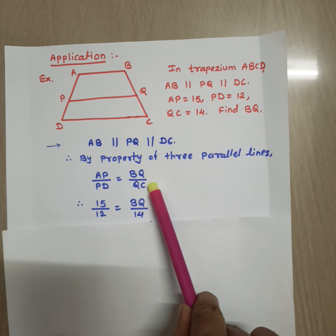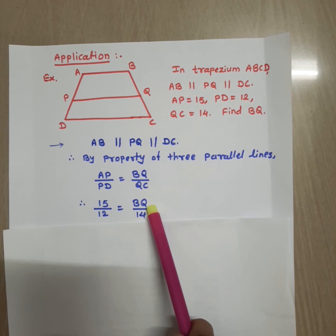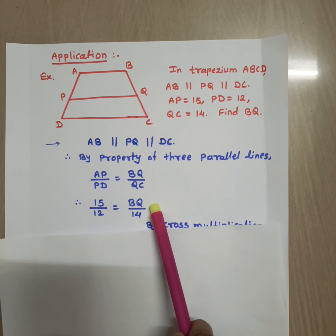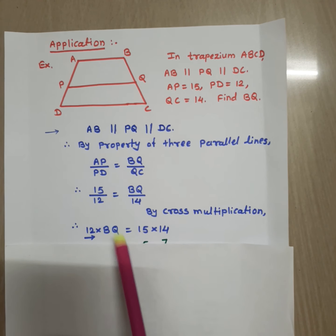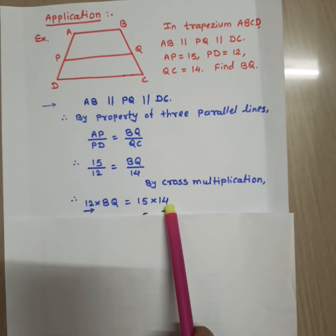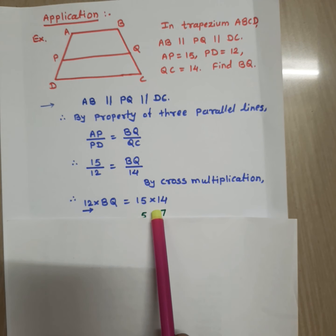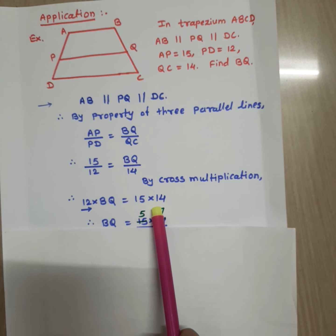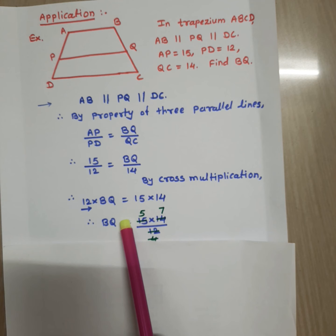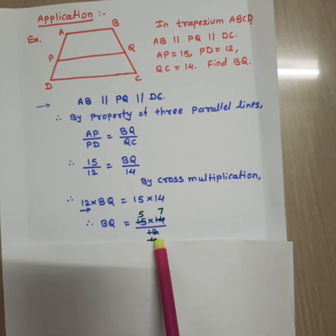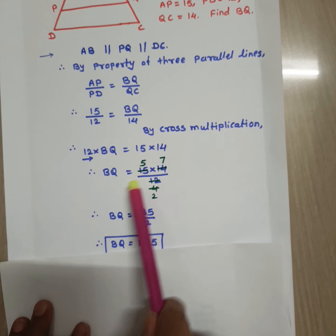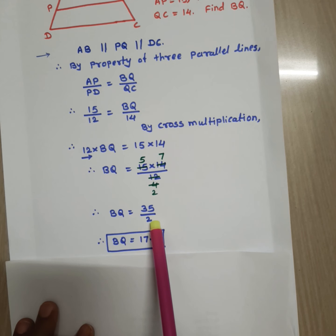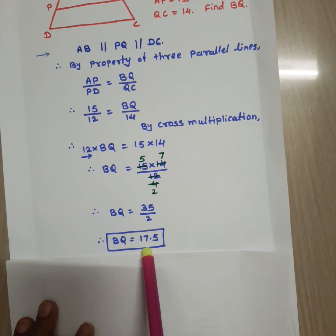Substituting: 15 upon 12 is equal to BQ upon 14. By cross multiplication, 12 × BQ = 15 × 14. Transferring 12 to the right-hand side: BQ = 15 × 14 upon 12 = 35 upon 2, which gives BQ = 17.5 units.